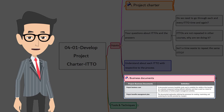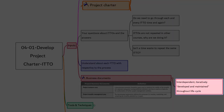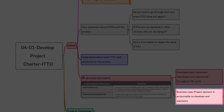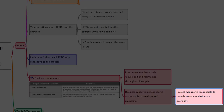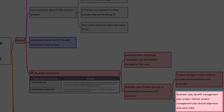I hope you remember our earlier discussion in the introduction session. Business documents contain two documents: one is the business case and the other is the benefits management plan. These two documents are interdependent and iteratively developed and maintained throughout the life cycle of the project. The project sponsor is accountable for the development and maintenance of the business case, whereas the project manager is responsible for providing recommendations and oversight to keep the business document in alignment with the goals and objectives of the organization — not just the business case, but also the benefits management plan, project charter, and project management plan.